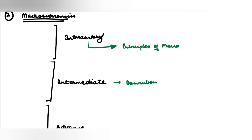When it comes to intermediate macroeconomics, Dornbusch alone would not be enough. So I have taken relevant chapters from Dornbusch and also relevant chapters from Salvatore, plus relevant chapters from other books. For macroeconomics, one book may not be sufficient at the intermediate level — you have to do more than just Dornbusch or Salvatore.